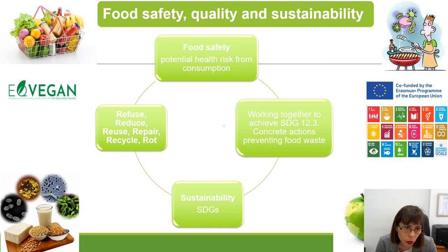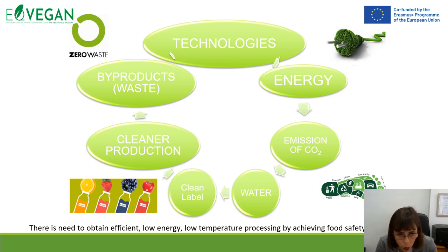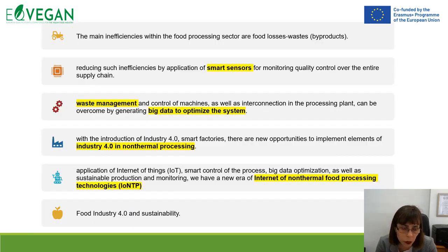To reduce, refuse, reuse, repair, recycle and run — six R's. We need to focus on zero waste production and obtain efficient low energy, low temperature processing by achieving food safety and quality. We need technologies that use less energy and produce fewer CO2 emissions, lower water usage, and achieve cleaner production. We also need to think about waste management, reducing and reusing by-products, and implementing digitalization and optimization into the food processing sector.